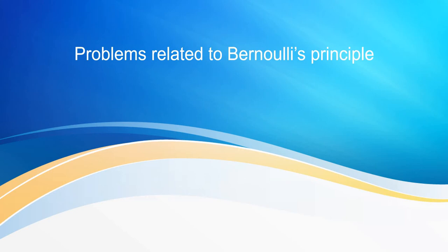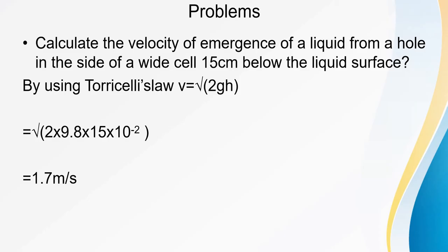We'll discuss our first question and its solution: calculate the velocity of emergence of a liquid from a hole in the side of a vessel, 15 centimeters below the liquid surface. Here you have to find the velocity with which liquid is coming through a hole that is 15 centimeters below the liquid surface.